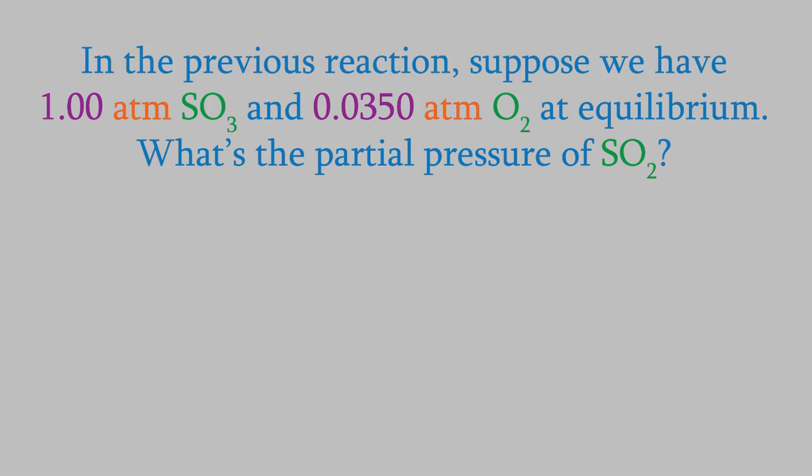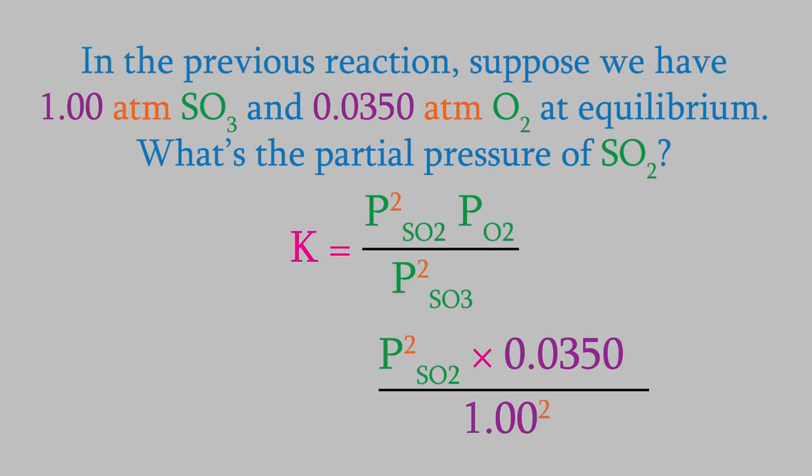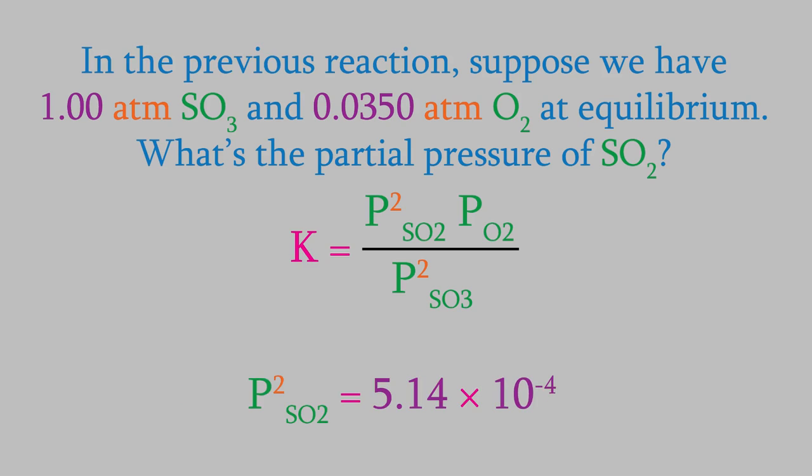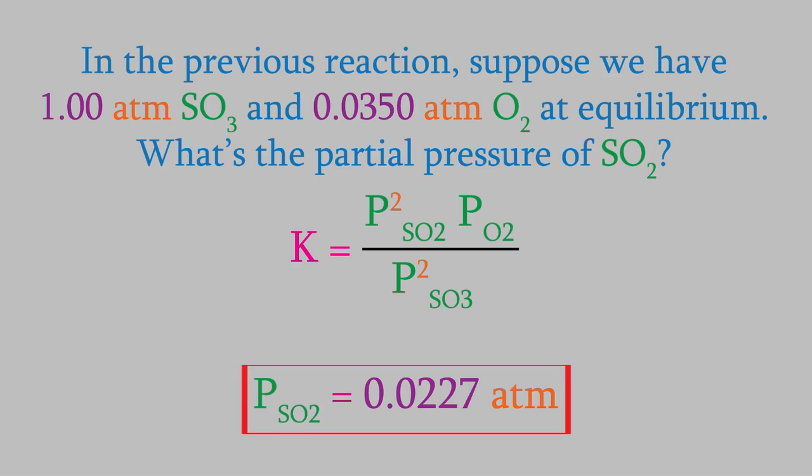For example, suppose we perform that last reaction again, but this time we start with different amounts of gases. When it reaches equilibrium, we find out we have 1.00 atm for sulfur trioxide and 0.0350 for oxygen. What's the pressure of the sulfur dioxide? We already know the equilibrium expression for this reaction. We'll plug in the pressures for SO3 and oxygen. We also know the value of K, which we calculated in the last problem. It's 1.80 times 10 to the minus 5. So now we can solve for the pressure. Don't forget that the pressure here has an exponent on it, so we'll need to take the square root in order to get the pressure by itself. We get 5.14 times 10 to the minus 4 for p squared. Now we take the square root and find that we get 0.0227 atm.